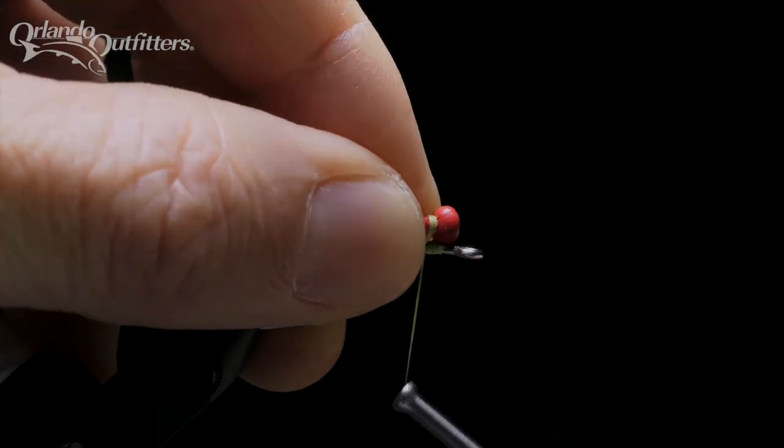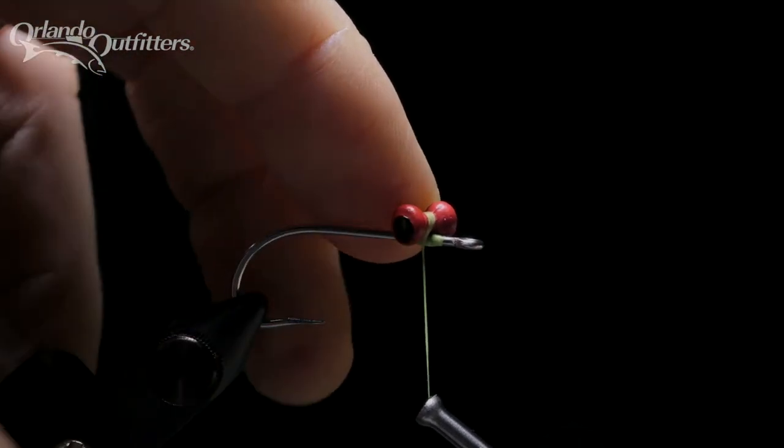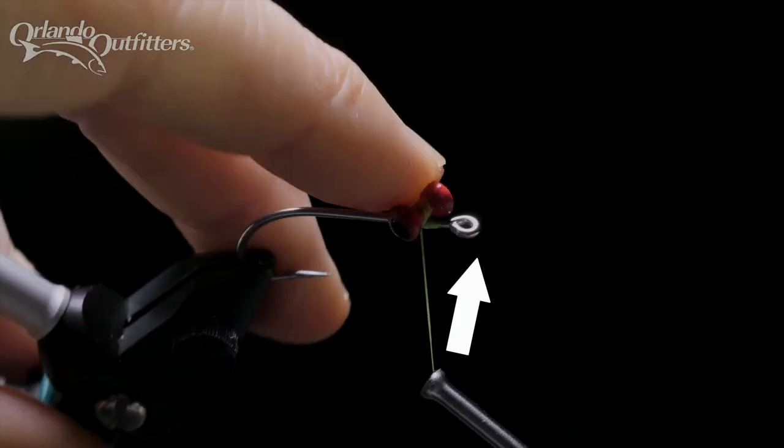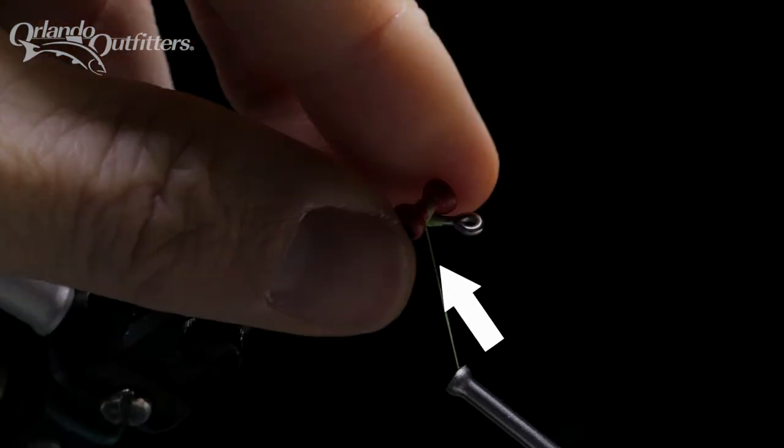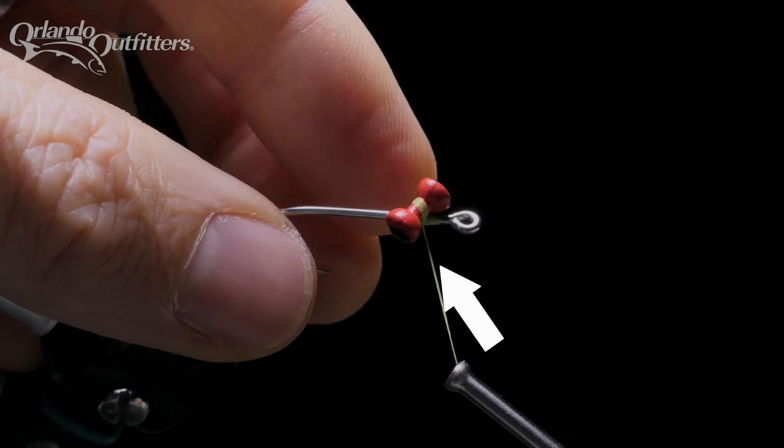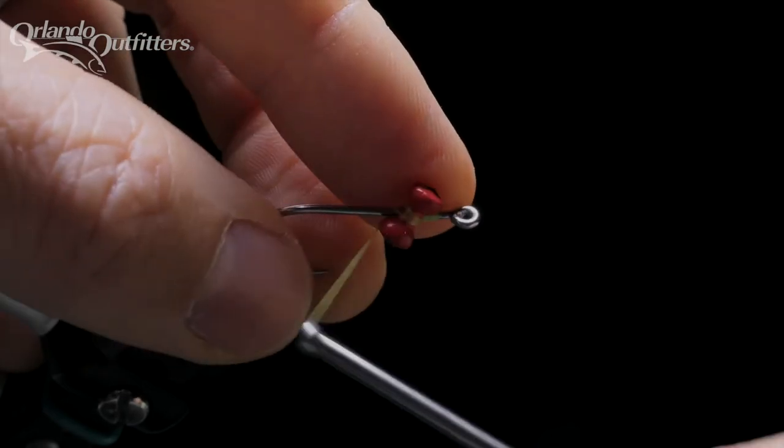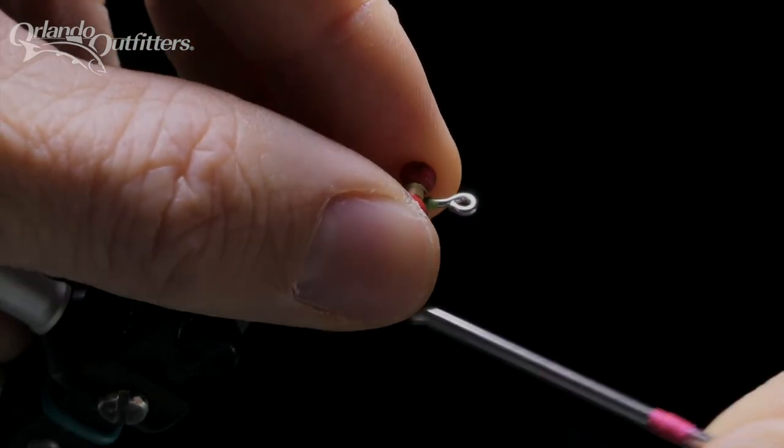Increase thread tension and allow the eyes to rotate off of the hook shank and into position. As the eyes rotate around, the thread wraps rotate with them, becoming crossing wraps from close right to far left. Place two wraps over the eyes and around the shank from close left to far right.